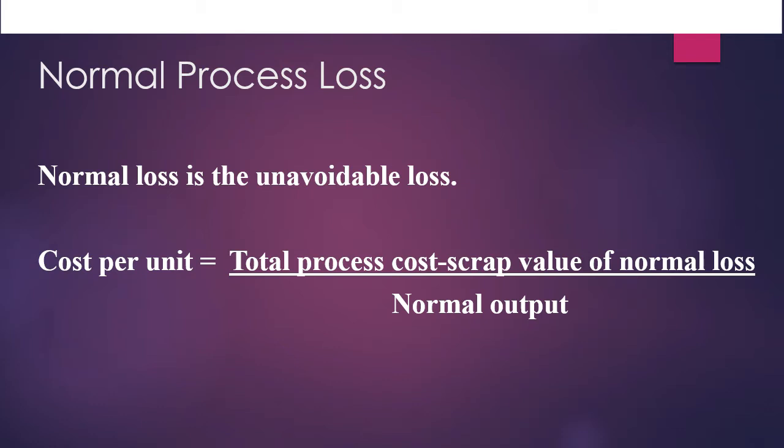The quantity of input minus the quantity of normal loss is termed as normal output. In the absence of scrap value, the process account is credited with the quantity of normal loss only. If there is scrap value, we will credit it with the value in the amount column.